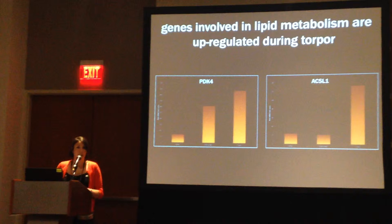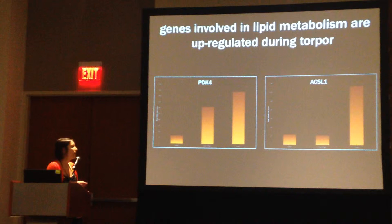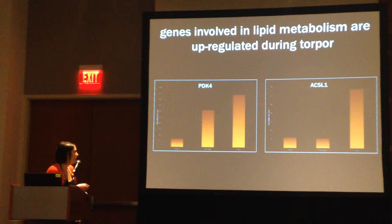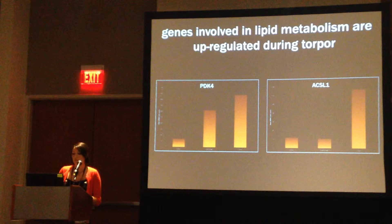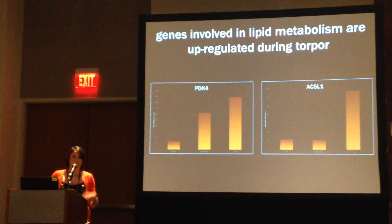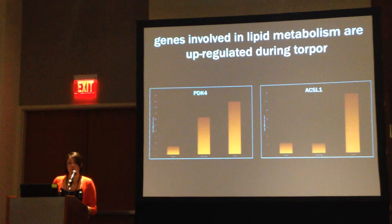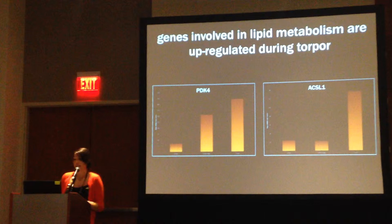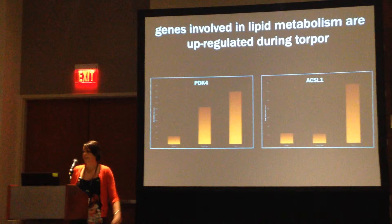We find that genes involved in lipid metabolism are upregulated during torpor. The y-axis in these graphs shows raw mRNA counts, and the x-axis shows time points: active, hyperphagic, and torpor. PDK4 is a gene that regulates lipid metabolism by inhibiting phosphorylation of intermediates into the TCA cycle, which effectively blocks glucose metabolism. ACSL1 converts free long-chain fatty acids into fatty acyl-CoA esters and therefore plays a key role in fatty acid degradation. It makes sense that these genes are upregulated during torpor relative to the active state.